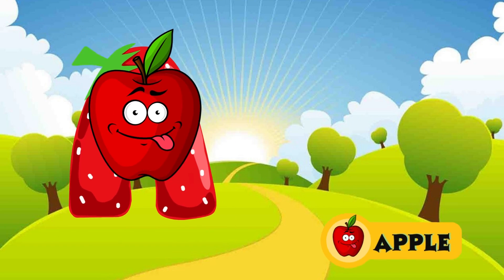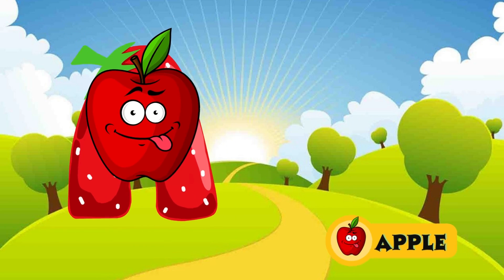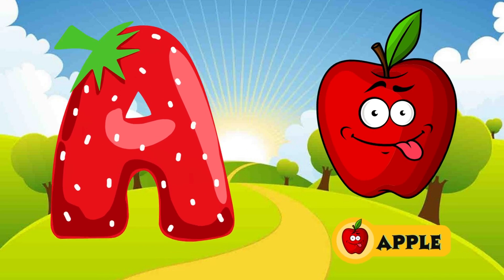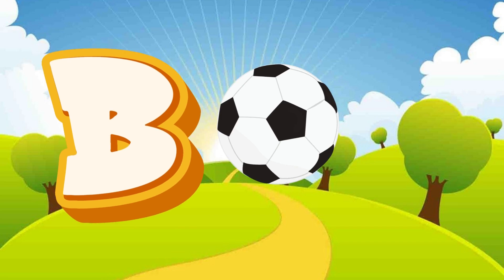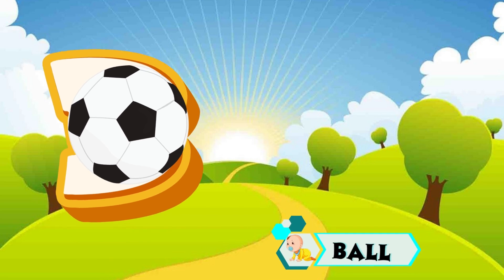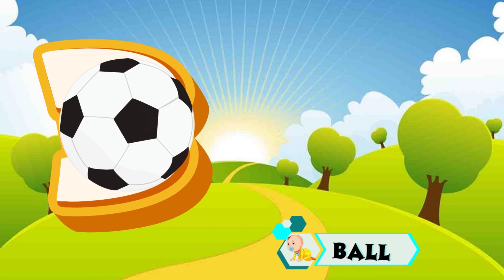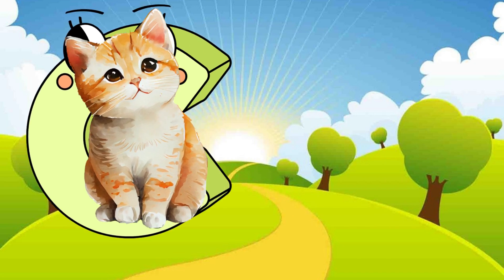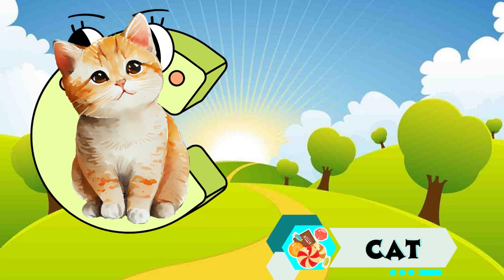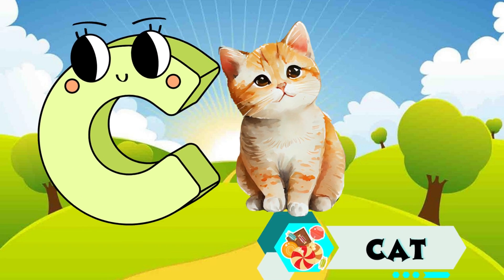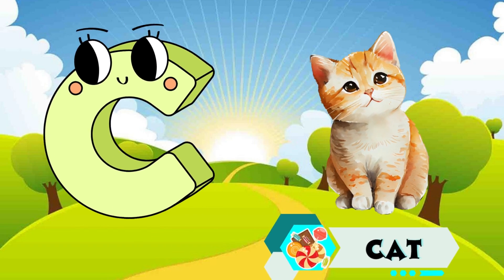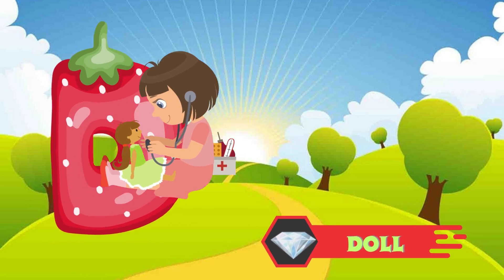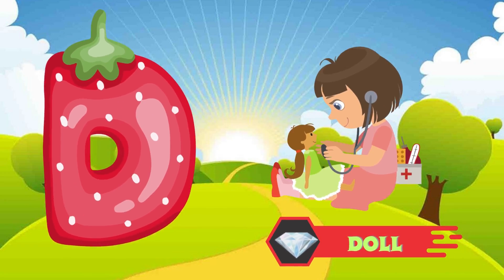A is for apple, a-a-apple. B is for ball, b-b-ball. C is for cat, c-c-cat. D is for doll, d-d-doll.